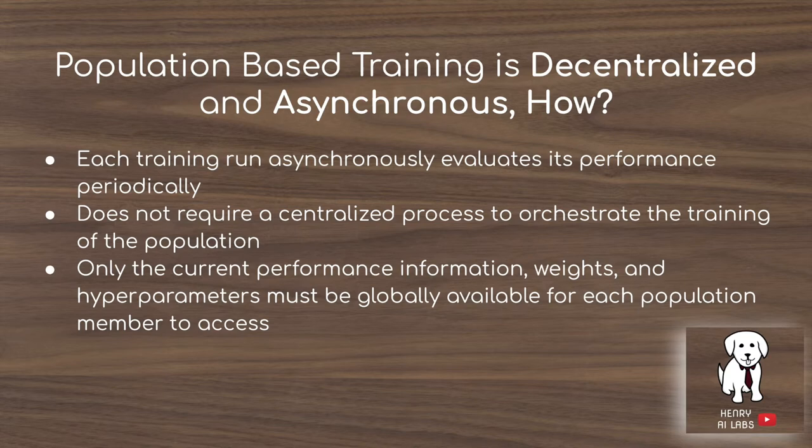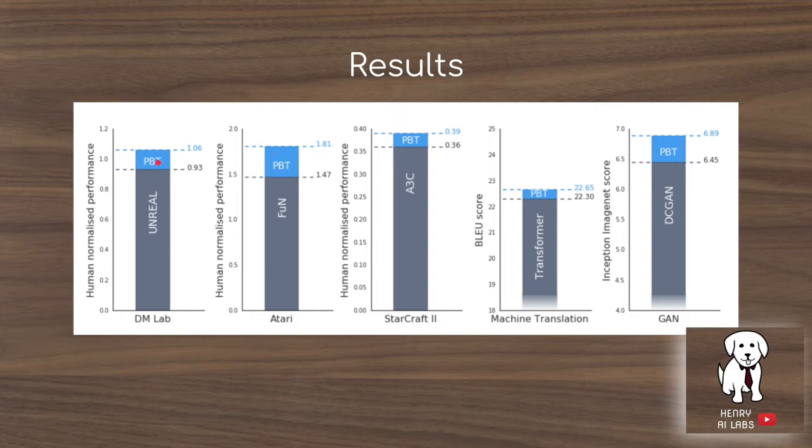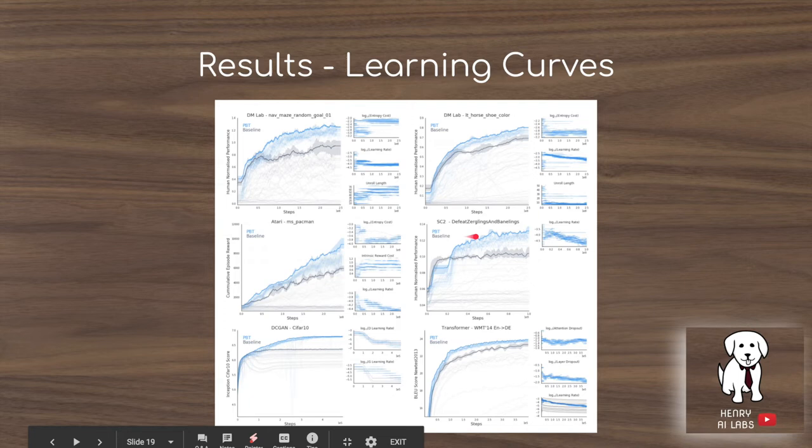These are the results they find across reinforcement learning tasks, neural machine translation with the transformer model, and the GAN as just described. There is a pretty sizable improvement in every case. Looking at the learning curves, you can see a pretty substantial improvement, and even in the Atari Ms. Pac-Man game, the curve hasn't saturated yet — suggesting further gains are possible.